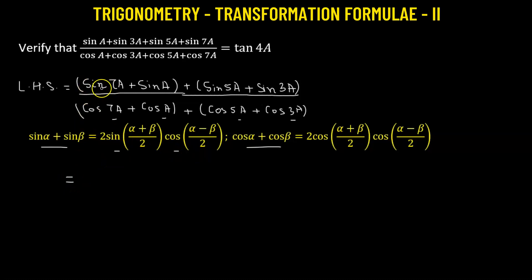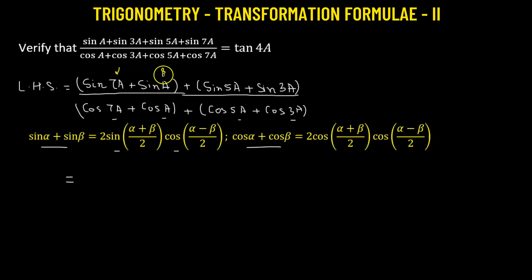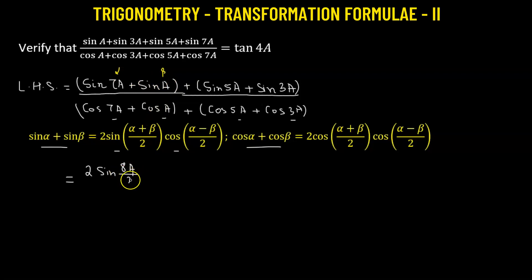For the first one, sine 7a plus sine a — we're going to treat 7a as alpha and a as beta, where alpha is greater than beta. So we get 2 times sine of (alpha plus beta)/2, which is 8a over 2, multiplied by cosine of (alpha minus beta)/2, which is (7a minus a) = 6a over 2.